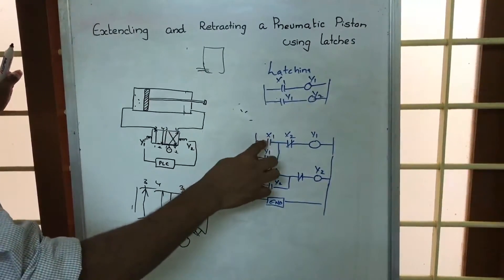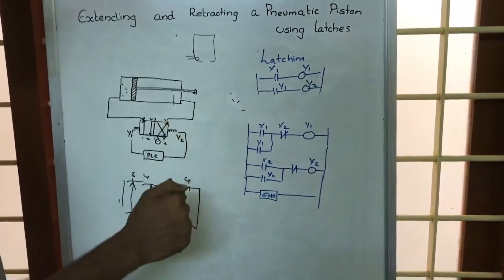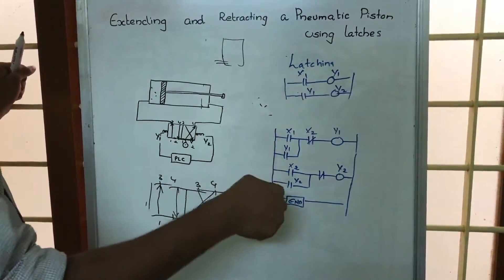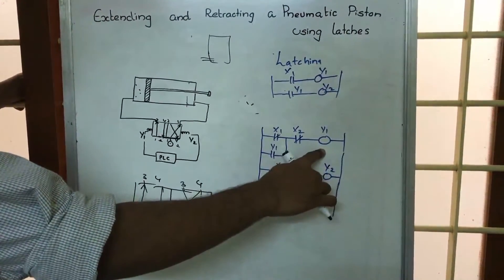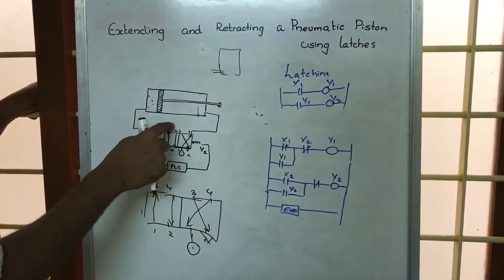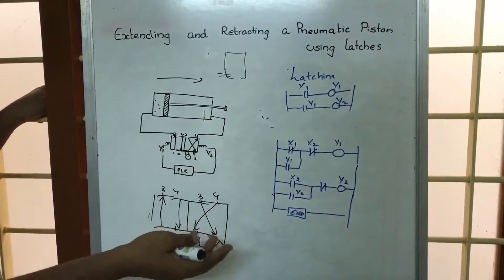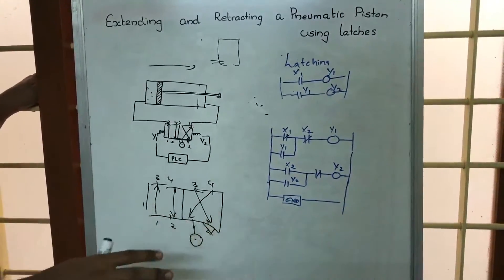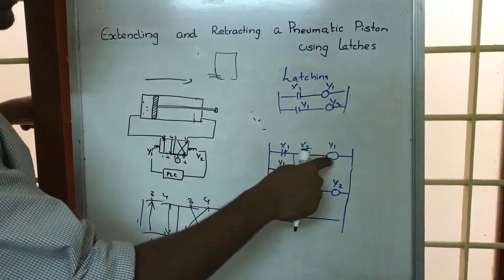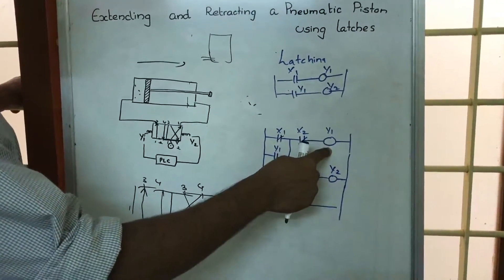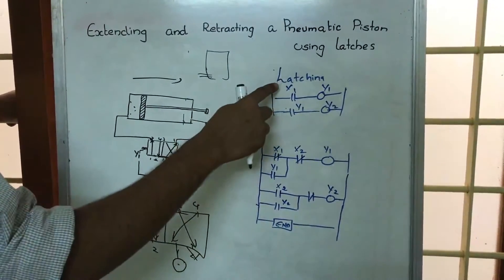x1 and x2 are two push buttons — they close only when pushed. When the driver pushes x1, it closes, and we get an output at y1. Output at y1 means port one connects to port three, so the piston moves to the right, opening the door. When x1 is pushed and y1 starts, there is a phenomenon called latching.